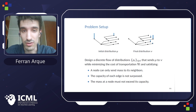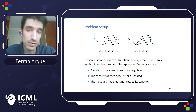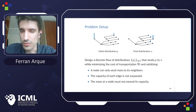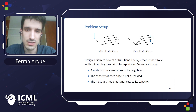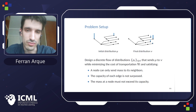Contrary to a minimum cost flow problem, where in a single step you compute the complete flow, here we want to find the discrete steps of the transportation, which do not have to depend on the previous steps. Also, from step to step, there can even be changes in the distributions, the topology of the graph, or the parameters.